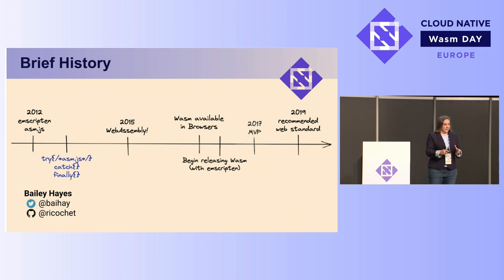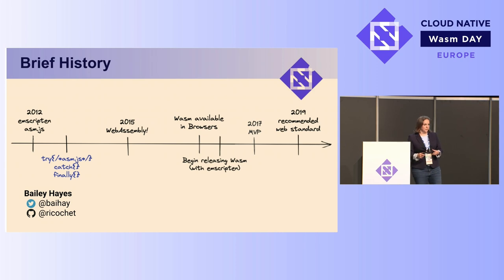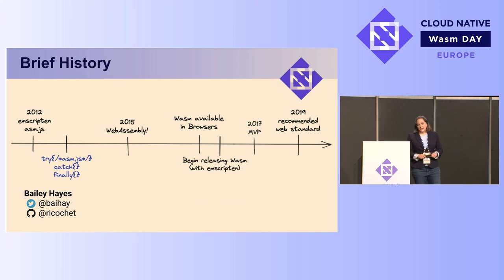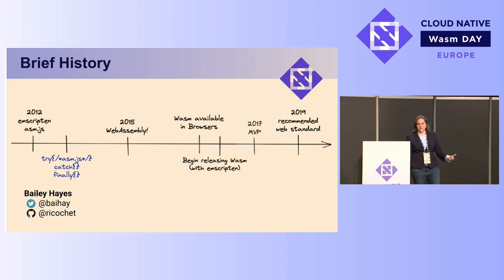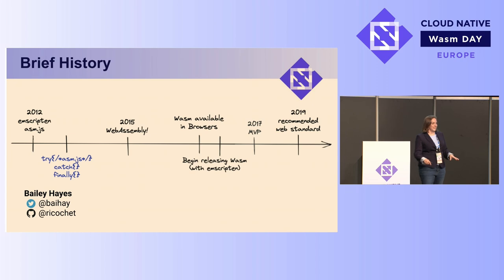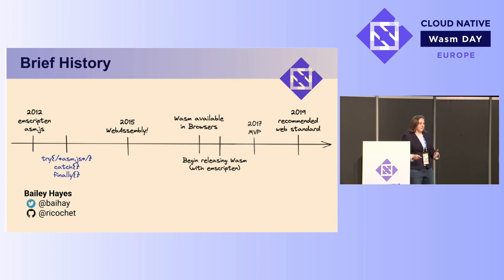With ASM.js, we proved a point that there was a need — more than just games were interested in running real, computationally intensive code on the web. That's when a number of browser vendors got together and pushed forward a specification: WebAssembly. The design phase started in 2015. Basically the moment it was available in any browser, we began compiling to it with a tool called Emscripten. By 2019, it became a recommended web standard and officially the fourth language of the web.